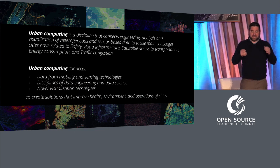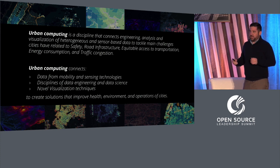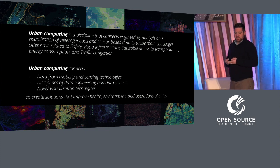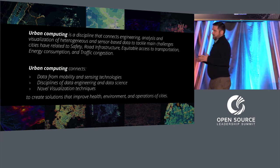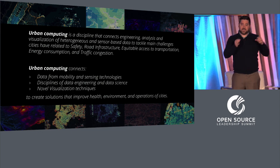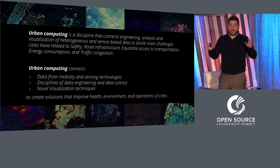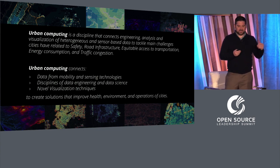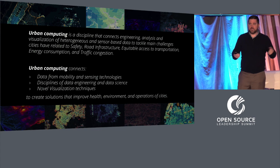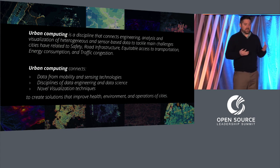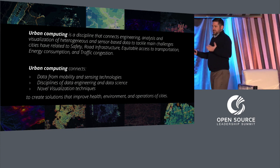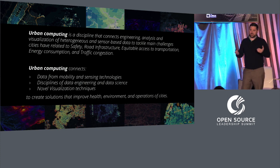From an urban aspect, urban computing is about tackling challenges that cities have across a broad area of safety, road infrastructure, equitable access to transportation, energy consumption, traffic congestion — tons of applications. Urban computing really starts from data across a wide variety of heterogeneous sources: data from sensors, data collected from incidents or government agencies. We combine that data together, use data science to analyze, aggregate, and process it, and use data visualization techniques to provide insights into that data, so that we can tackle challenges that cities may have.